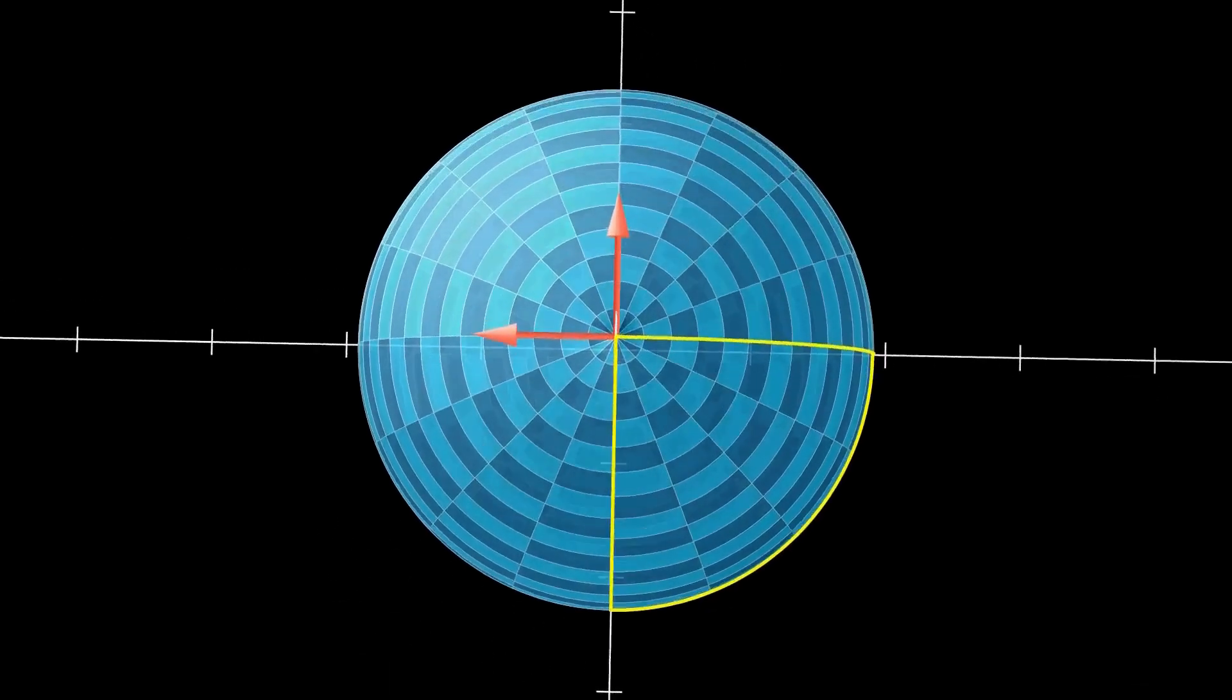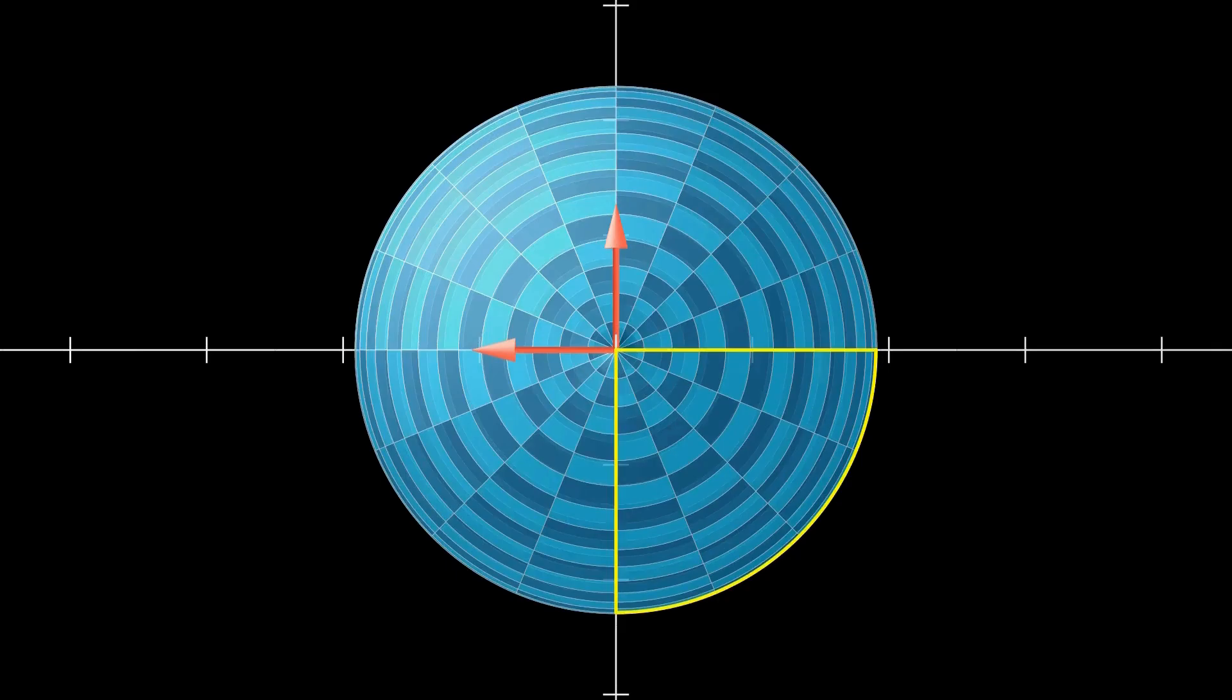So this means the result of parallel transporting depends on the path taken. This is only true on a curved space. If we had flat space, such as the standard Cartesian coordinate system, then the result is independent on the path taken.